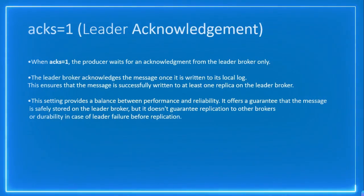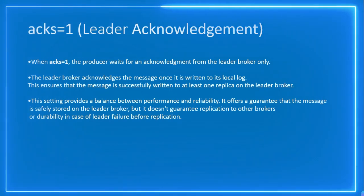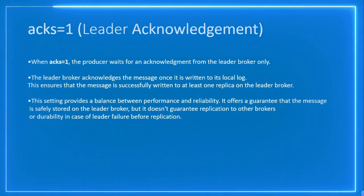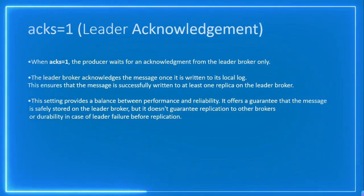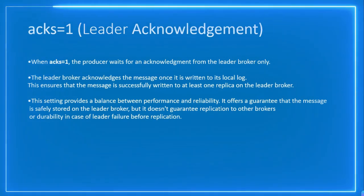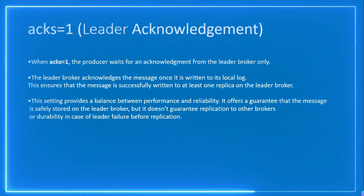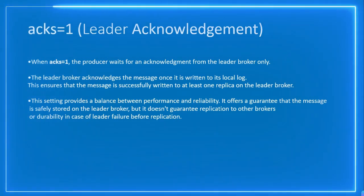The next level is acknowledgement equal to one, which is called leader acknowledgement. When we set acknowledgement equal to one, the producer will wait for acknowledgement from the leader broker that it has received the message. The leader broker acknowledges the message once it is written to its local log, ensuring the message is successfully written to at least one replica.